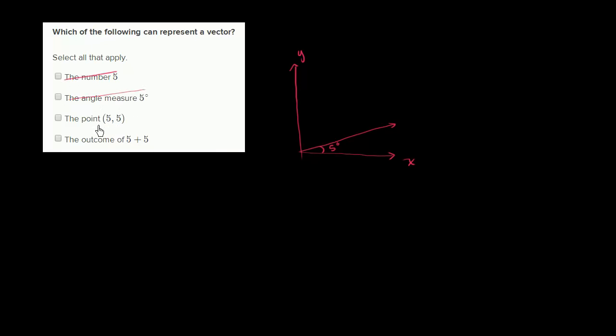The point 5 comma 5. Now this is interesting. If we say that the point is the end point of a vector that started, that starts at the origin, so let's draw that out.